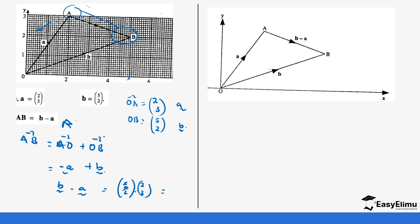So this becomes, we are subtracting 5 minus 2 and 2 minus 3, which will give us 3, -1. So you see how we end up with B minus A because of the direction of the vector. So that's what basically means addition of vectors. So we move from A to O plus O to B, which ends up being B minus A.